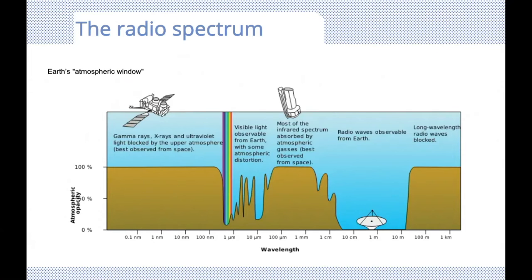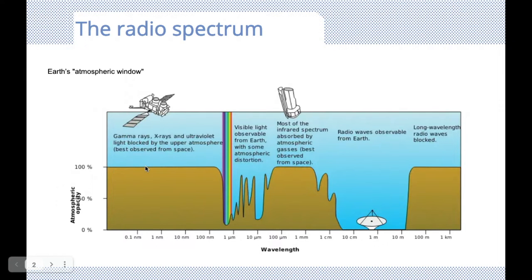Let's have a look at the spectrum. The electromagnetic spectrum is a large spectrum. On the higher frequencies and short wavelengths, the atmosphere is actually in our way — it does not allow signals to pass through, so we can't observe them from the ground.